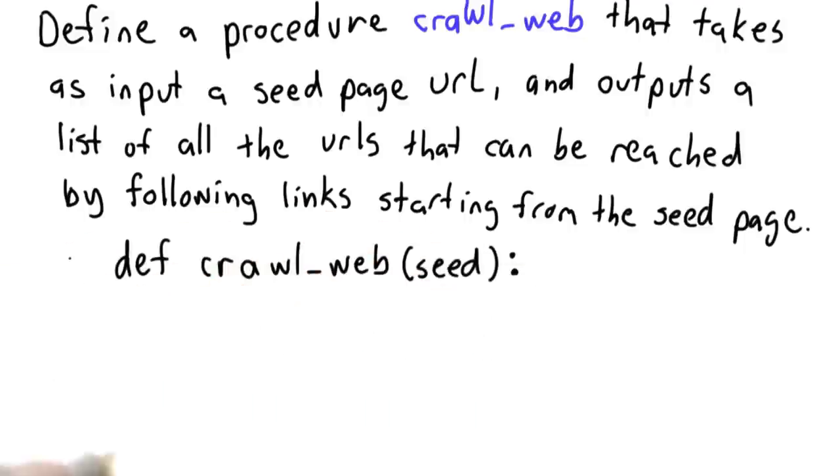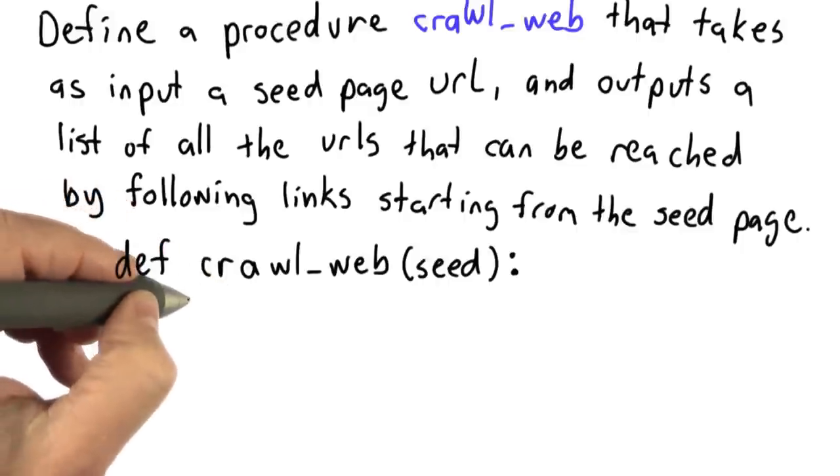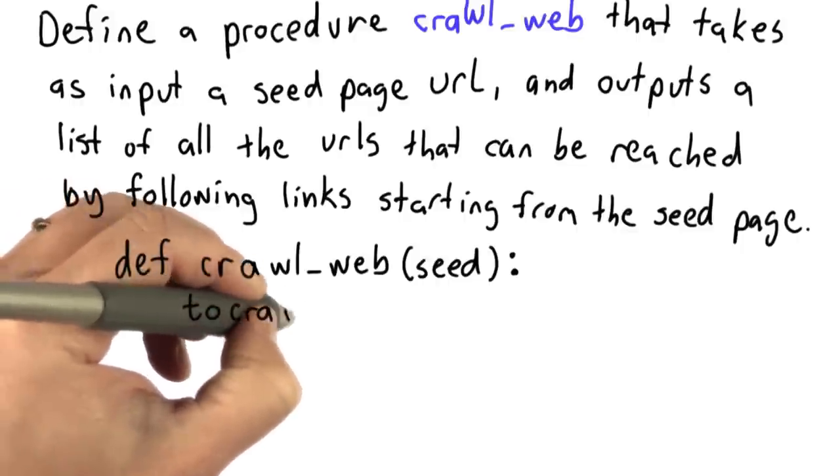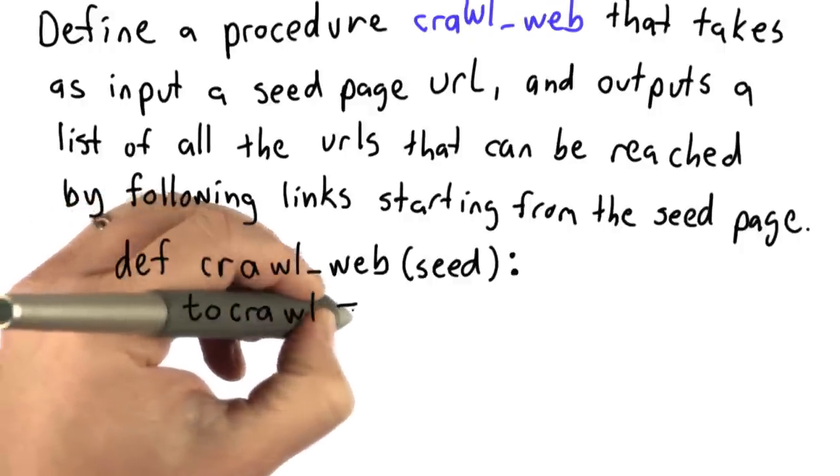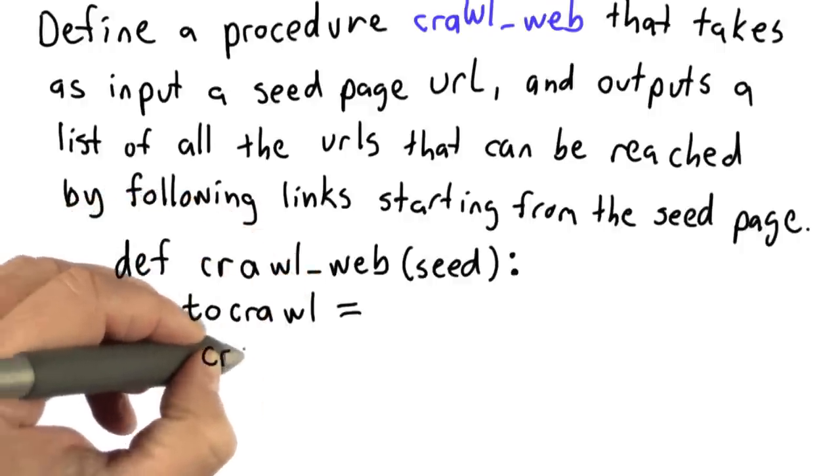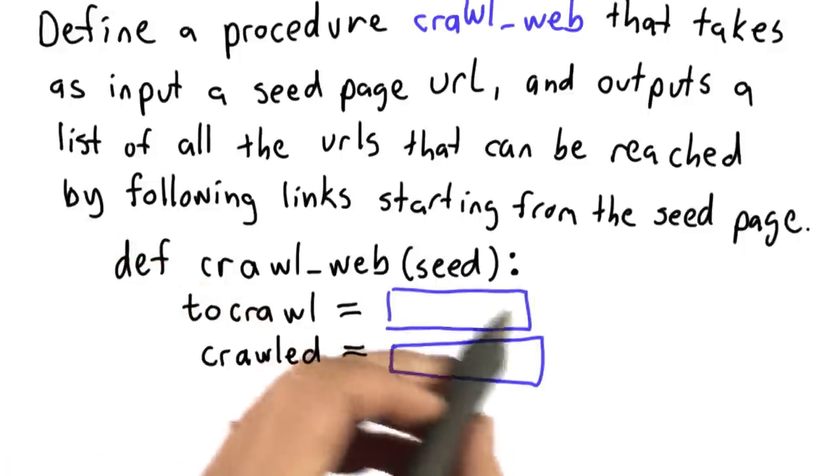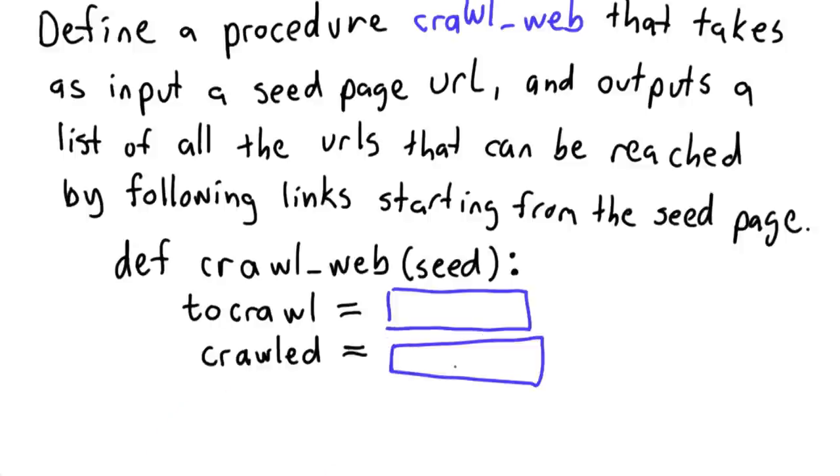We'll start defining our procedure crawl-web and introduce two variables: the to_crawl variable that keeps track of the pages we need to crawl, and the crawled variable that is a list of the pages we've already crawled. For the first step, your goal is to figure out how to initialize these variables—what should the first values of to_crawl and crawled be?